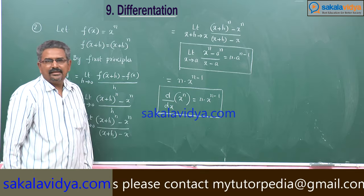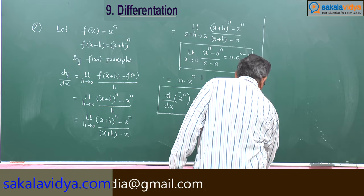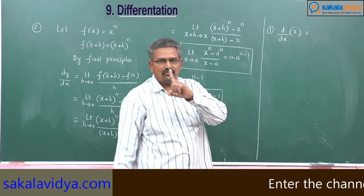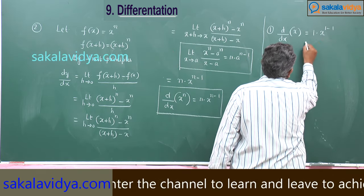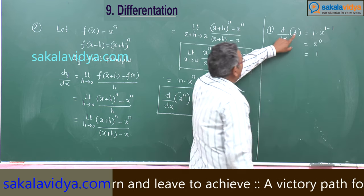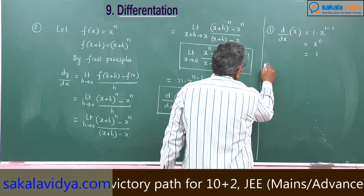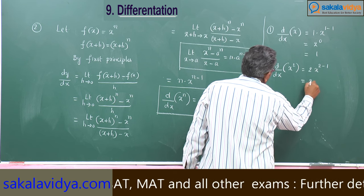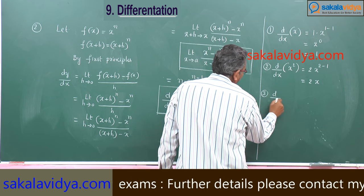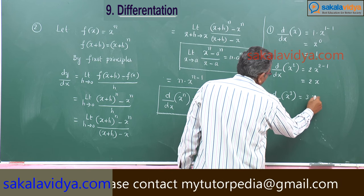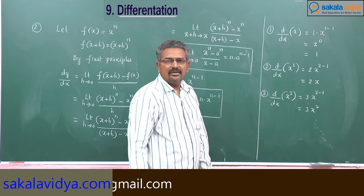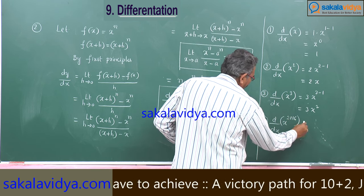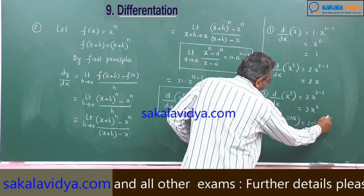Using this result, let us work out some examples. d by dx of x: since the power is 1, this gives 1 times x to the power of 0, which equals 1. d by dx of x squared: 2 times x to the power of 2 minus 1, which is 2x. d by dx of x cubed: 3 times x to the power of 2, which is 3x squared. Similarly, d by dx of x to the power of 2016 equals 2016 times x to the power of 2015.